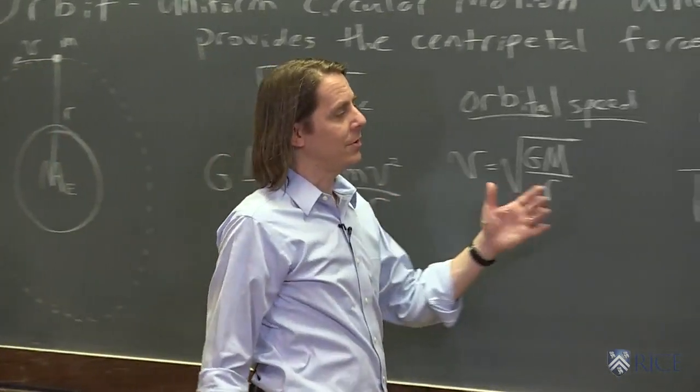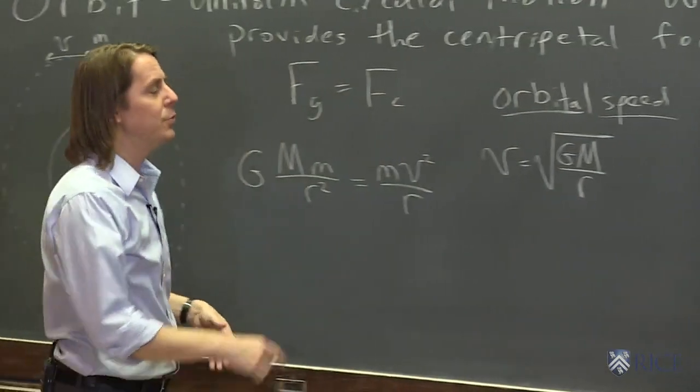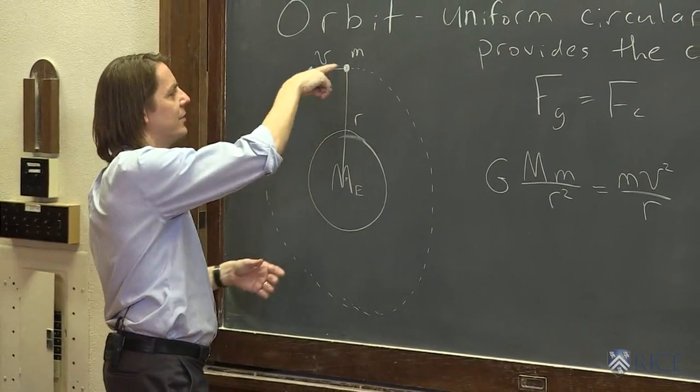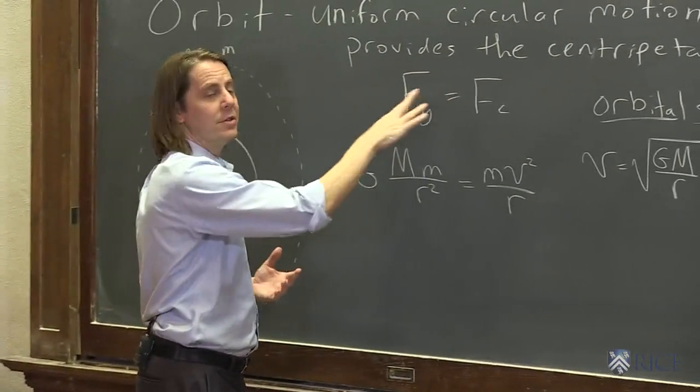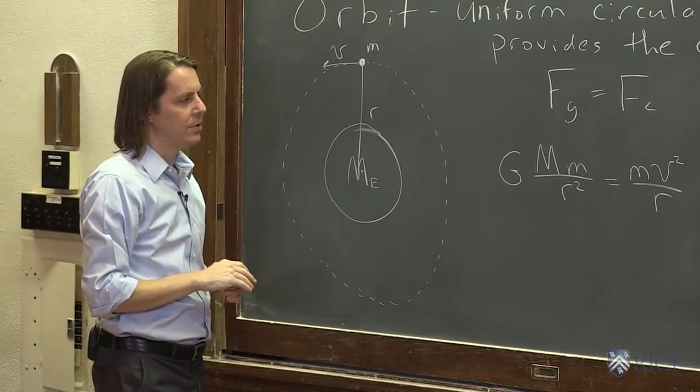And same thing for the period. Obviously, if the velocity is limited, then the period is also limited. If you want to be at a certain distance out, it's going to take a certain amount of time for the thing to get around. So the orbits are defined by this relationship. There's a specific orbital speed and period at a specific distance away.